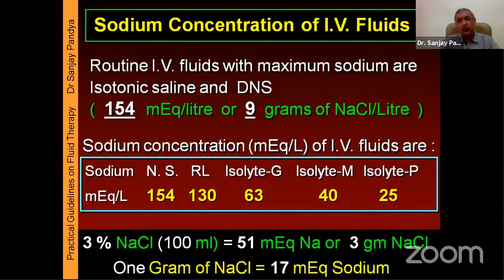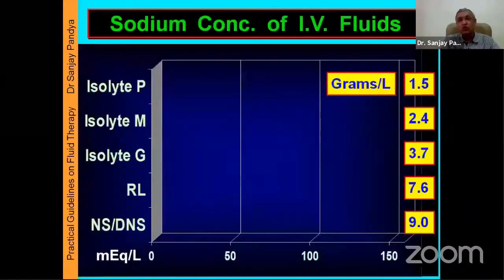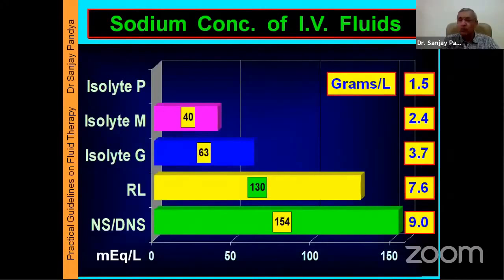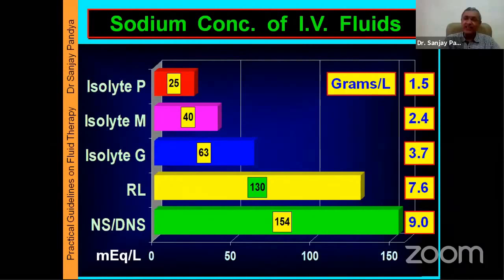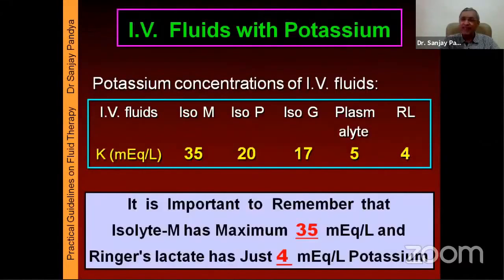Ringer's lactate has roughly 7 g of salt, and all isolytes are comparatively poor in sodium. In some special cases, we use 3% NaCl, which is available in 100 ml and contains 3 g of salt. When we want to select a fluid to provide more sodium, the preferred sodium-rich fluids are DNS and normal saline, which have 154 mEq or 9 g of salt, and Ringer's lactate has 130 mEq or roughly 7 g of salt. The rest of the fluids are not rich in sodium, and therefore when we want to provide sodium, these are the preferred fluids.